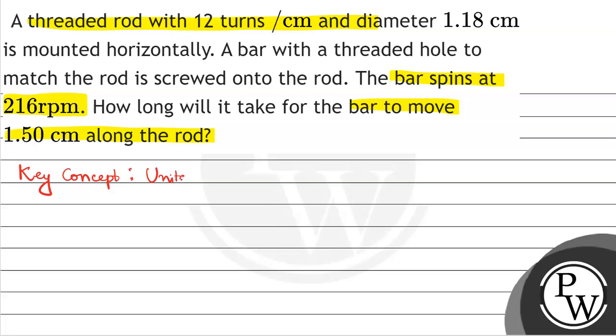So what is given in the question? For one centimeter, it takes 12 turns. That means for 1.50 cm, it will take 1.5 × 12 = 18 turns.